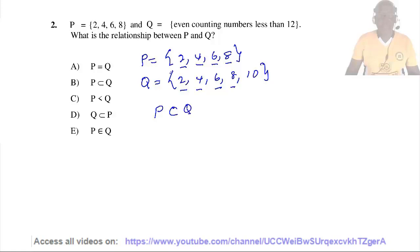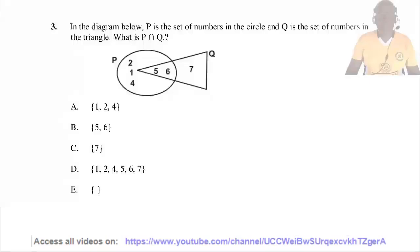So the answer is B. Question 3: In the diagram below, P is a subset of numbers in the circle and Q is a subset of numbers in the triangle. What is P intersection Q? P intersection Q equals {5, 6} because the elements 5 and 6 are common to both P and Q. So the answer is B.